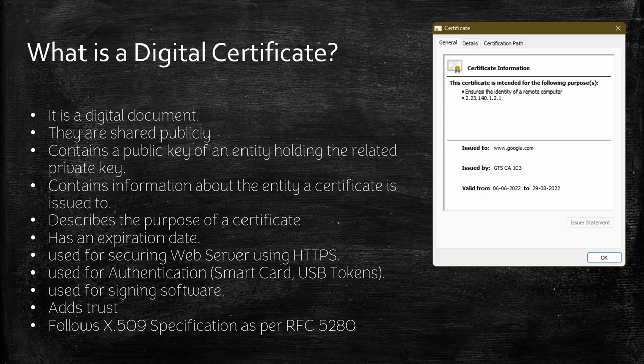They may include information such as the public key associated with a private key of a certificate owner, information such as organization name, location, email address, and the department. A certificate will have a date and time of issuance including an expiration date. A certificate will also have information about its intended purpose. These certificates are distributed on the internet or within a network freely.